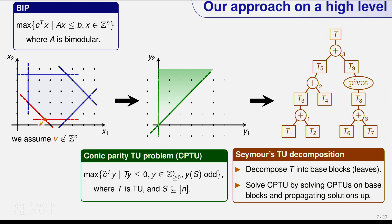Here's a 2D example. The polyhedron is a cone from a TU matrix. If S is just the first coordinate, you want to optimize over integer points in that cone where the first coordinate is odd — those are the solid points shown. Because of the oddness constraint, the origin is never feasible for CPTU problems. This is important because the origin corresponds to the ILP optimum we want to cut off. Then we apply Seymour's decomposition on this TU matrix T to decompose the problem into simpler subproblems.